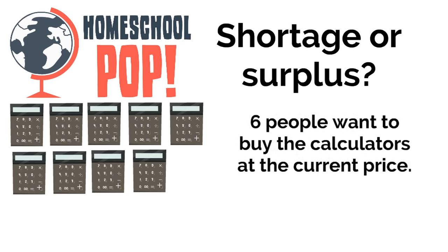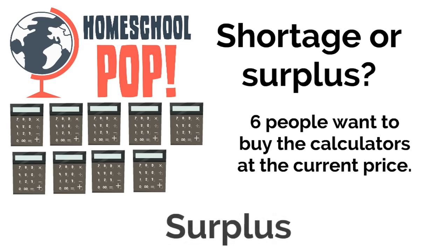Let's try this one. Let's say an office store has nine calculators that they are selling, and there are six people who want to buy the calculators at the current price. So there are nine calculators and six people willing to buy at the current price. Is there a shortage or surplus? A surplus. There are too many calculators to sell. The store might need to lower the price of the calculators so more people are willing to buy them, and there would no longer be a surplus.